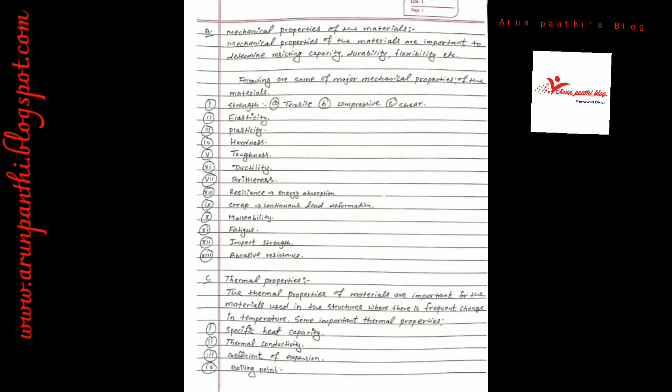Frost resistance — these are physical properties. Construction material mechanical properties include: compressive, shear, elasticity, plasticity, hardness, and toughness. Mechanical properties are important to determine the resistance capacity, durability, and flexibility.